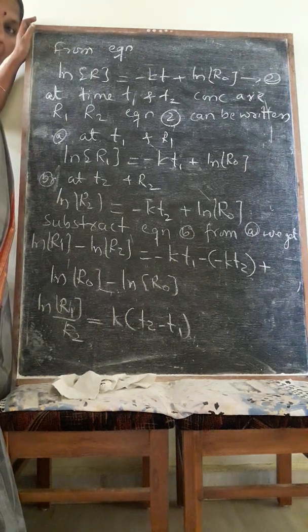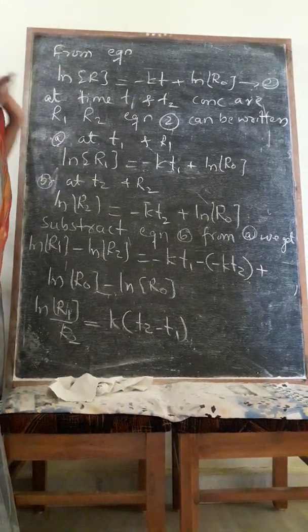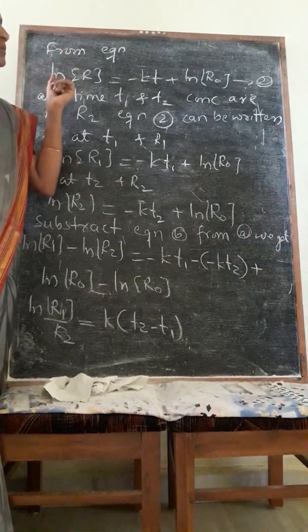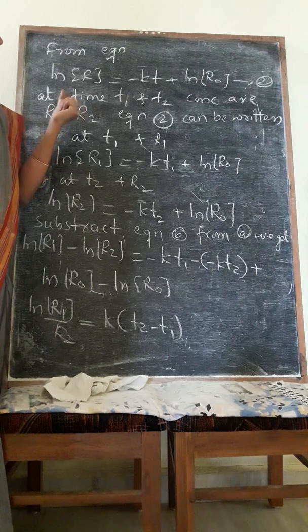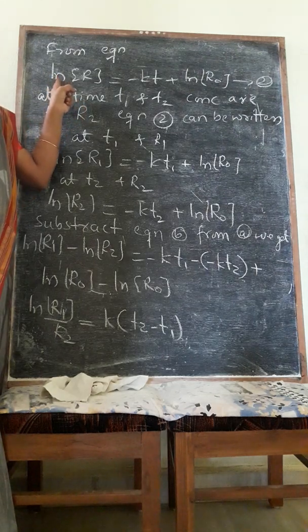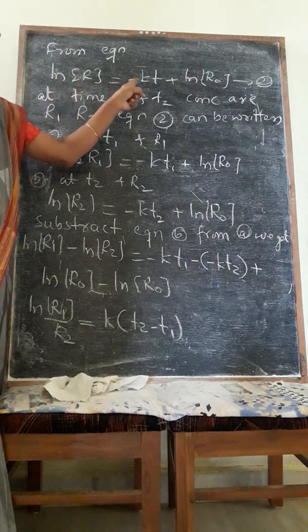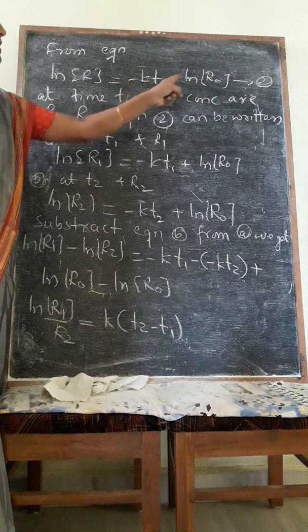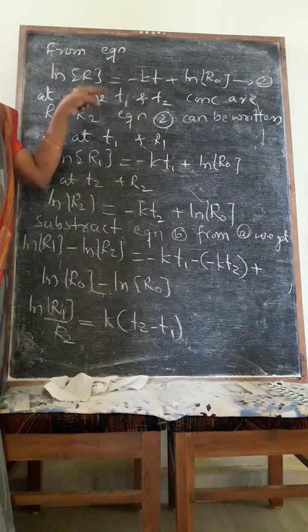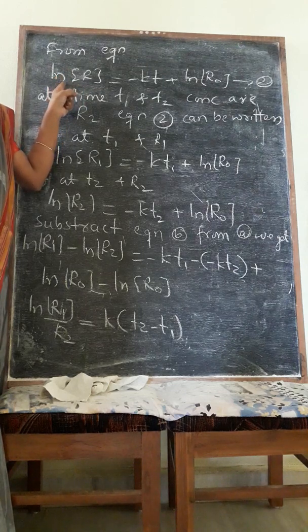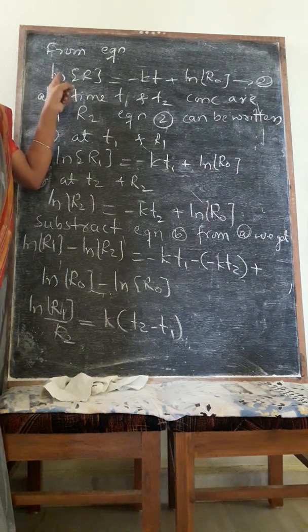We have already derived the integrated rate equation for first order reaction. Now, from those derived equations, one form equation is ln R equals minus kT plus ln R0. This is an equation of a straight line. We have already drawn a graph for this equation.